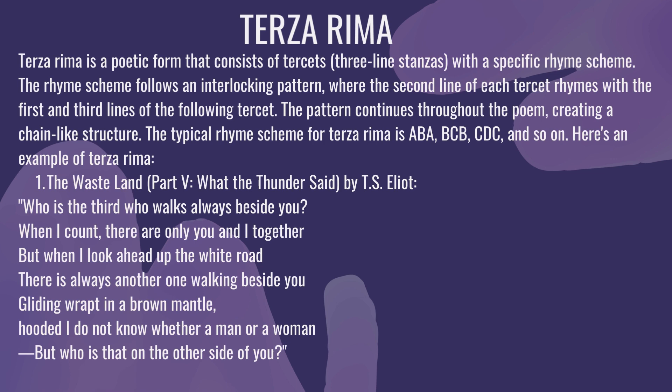Terza Rima's rhyming scheme is a, b, a, b, c, b, c, d, c. This pattern follows all the rhyming schemes throughout the poem.